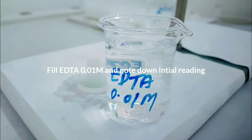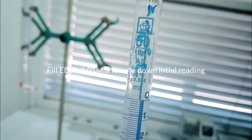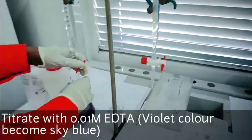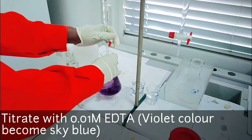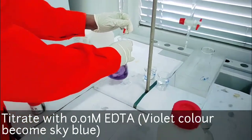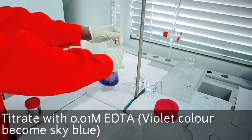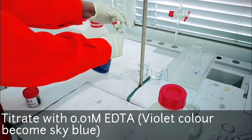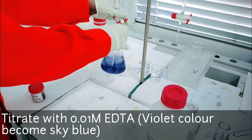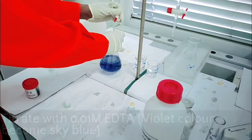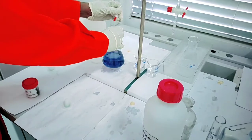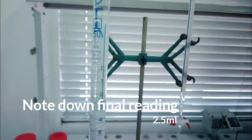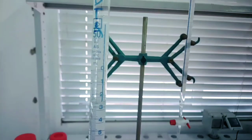Use 0.01M EDTA. Note down the initial reading. Color can become violet color to sky blue color. Note down the final reading, it is 2.5 ml.